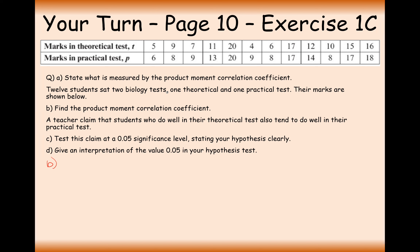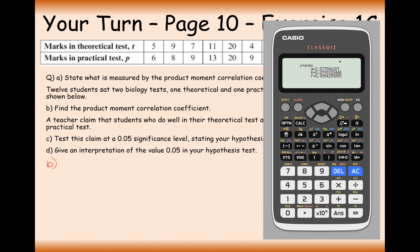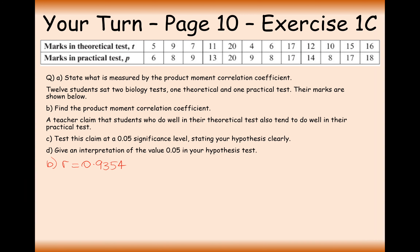Next, 12 students sat two biology tests — one theoretical and one practical — and their marks are shown below. Find the product moment correlation coefficient. On your calculator: go to Menu, option 6, then select bivariate data — option 2. Type in your data set, hit Option, then select option 4 to get your line of best fit values. The product moment correlation coefficient comes out as 0.9354 — pretty strong correlation, though with only 12 students we'll see if it's enough.